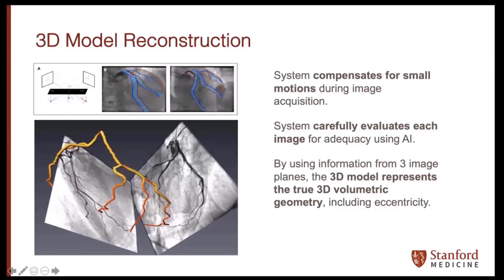The first step is 3D model reconstruction that the algorithm creates. The system, which is very clever software, compensates for small motions during image acquisition. You take a good quality coronary angiogram in multiple orthogonal planes, as one should do in routine good clinical practice. The system compensates for any small motions, carefully evaluates each image in each orthogonal plane for adequacy using an AI algorithm, and then based on at least three distinct image planes, renders a 3D model depicting the true 3D volumetric geometry — accounting for eccentricity, tortuosity, side branches, and tapering vessels.